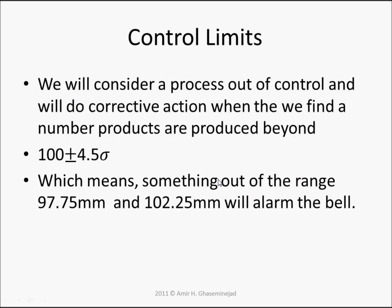We can set the control limits at 4.5 standard deviations. We will consider a process out of control and take corrective action when products are produced beyond 4.5 standard deviations from the mean — meaning products shorter than 97.75 millimeters or longer than 102.25 millimeters. When something like this or farther happens, we will sound the alarm and be alerted that something is going wrong.